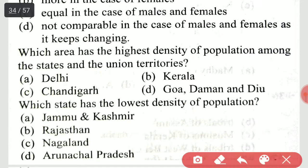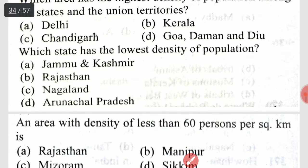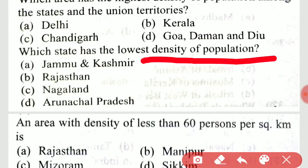Which area has the highest density of population among the states and union territories? That is option A, Delhi. Which state has the lowest density of population? That is option D, Arunachal Pradesh.